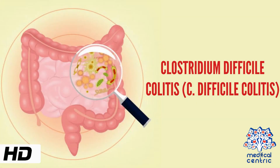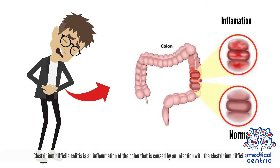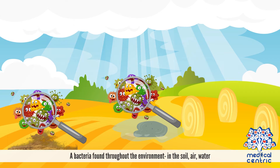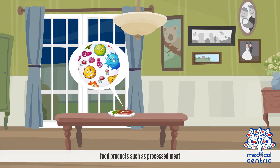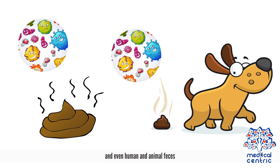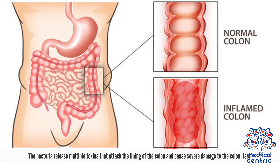Today's topic is Clostridium difficile colitis, or C. difficile colitis. Clostridium difficile colitis is an inflammation of the colon caused by an infection with Clostridium difficile, a bacteria found throughout the environment — in the soil, air, water, food products such as processed meat, and even human and animal feces. The bacteria release multiple toxins that attack the lining of the colon and cause severe damage to the colon itself.